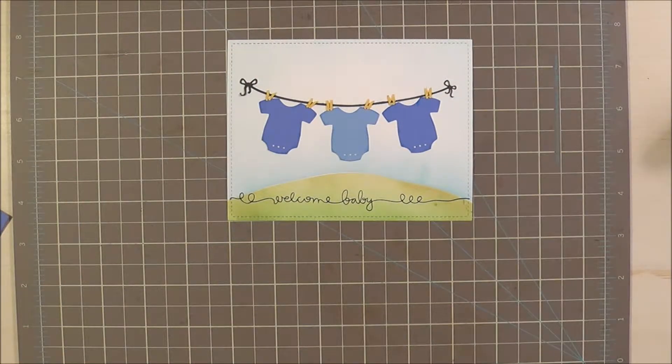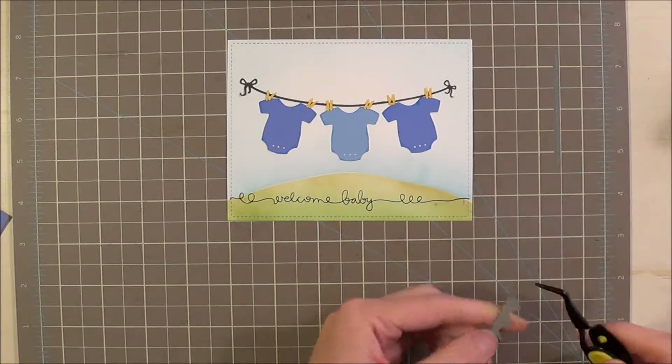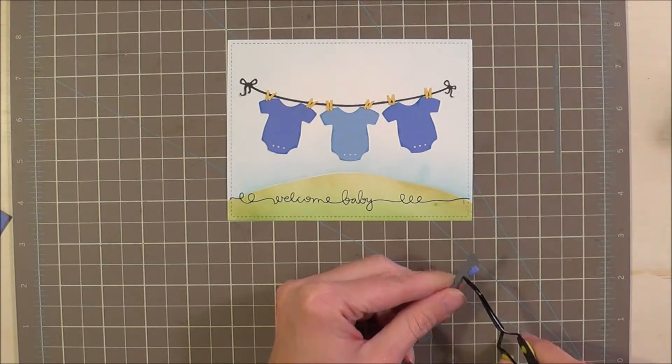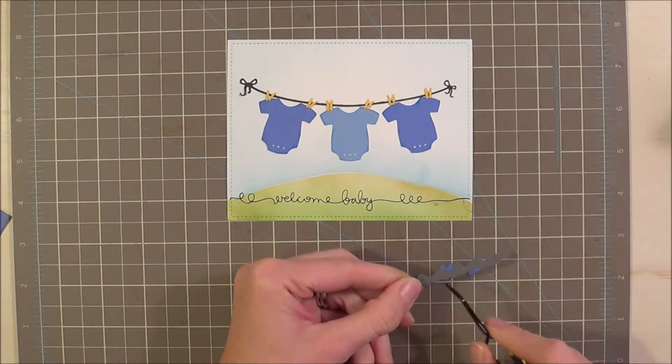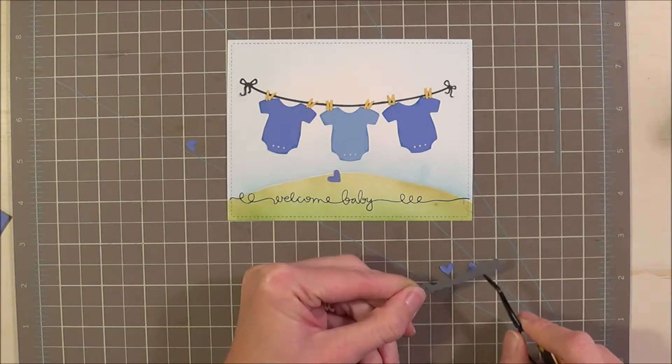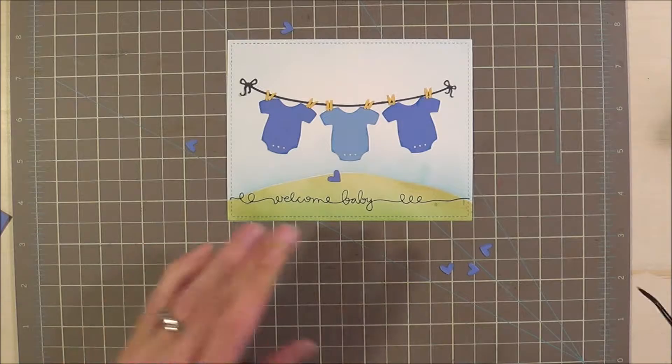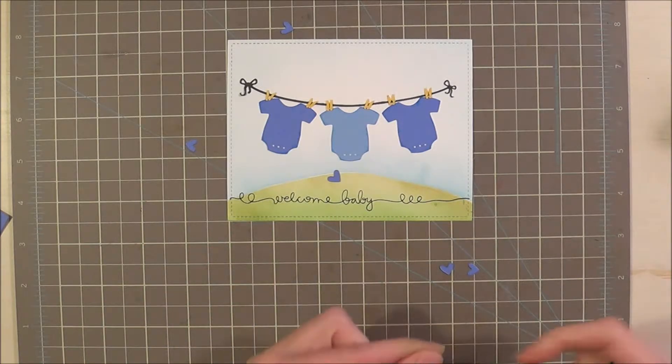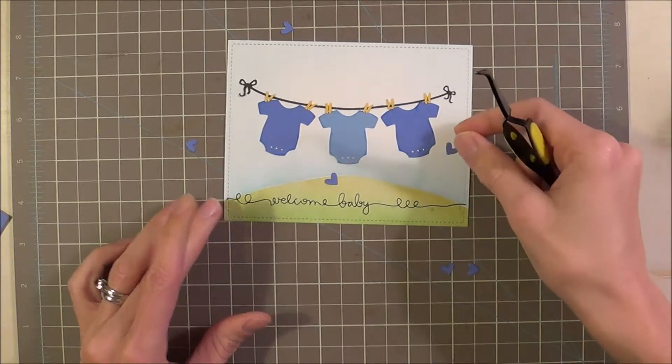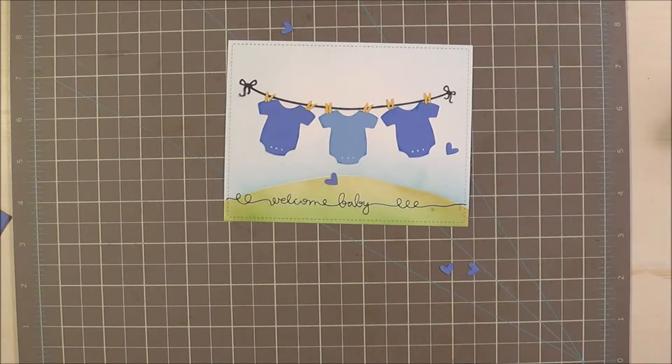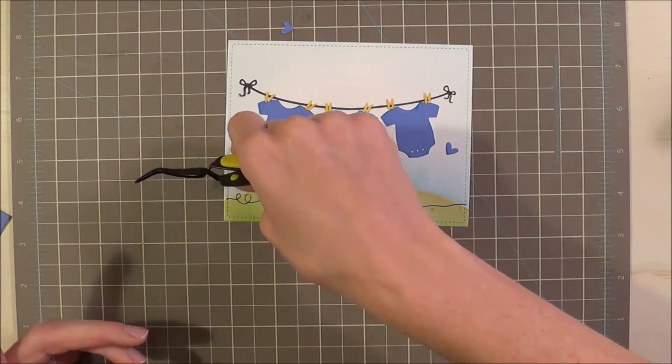So I have these little hearts here that I cut out with this Lawn Fawn heart die. And I'm just going to place some around the card. And if anyone is curious, it was a little boy that they had. So hence all the blue.